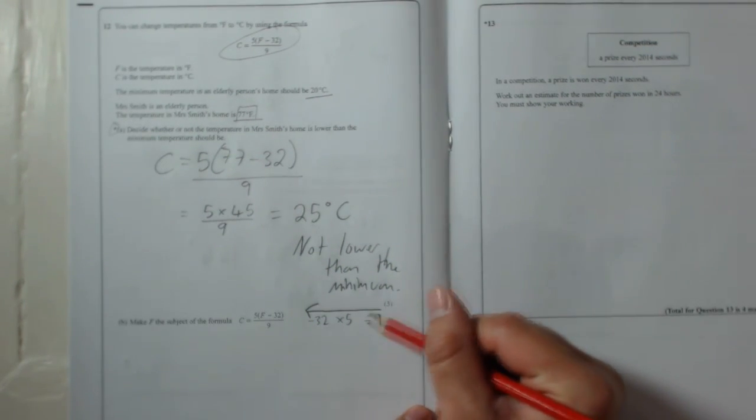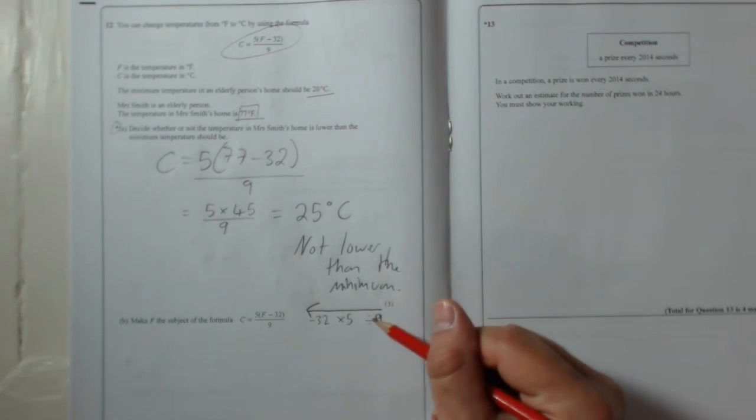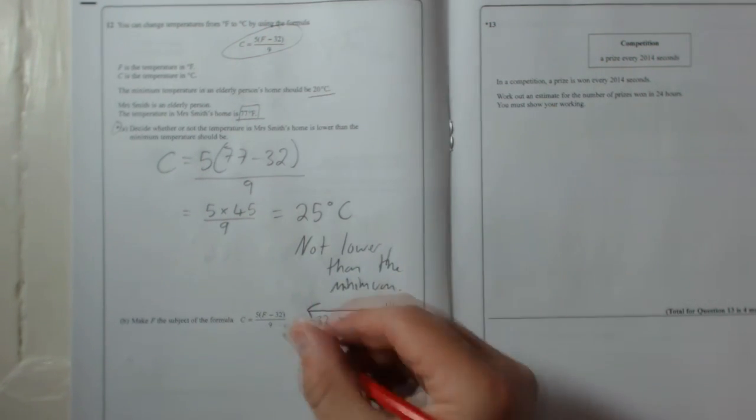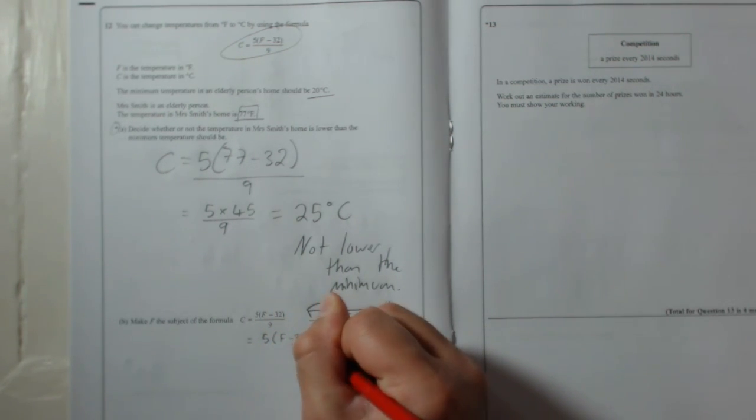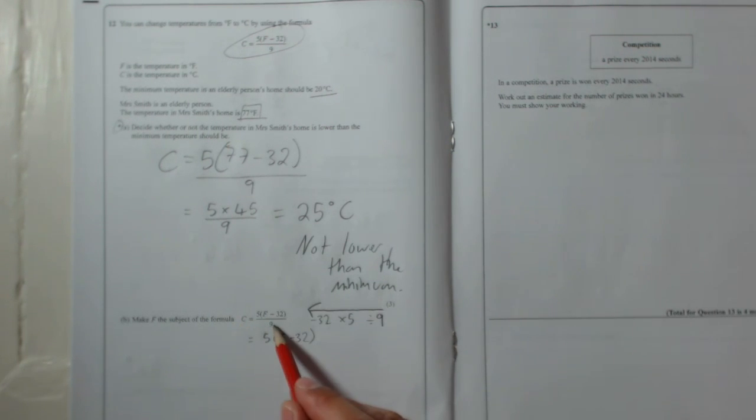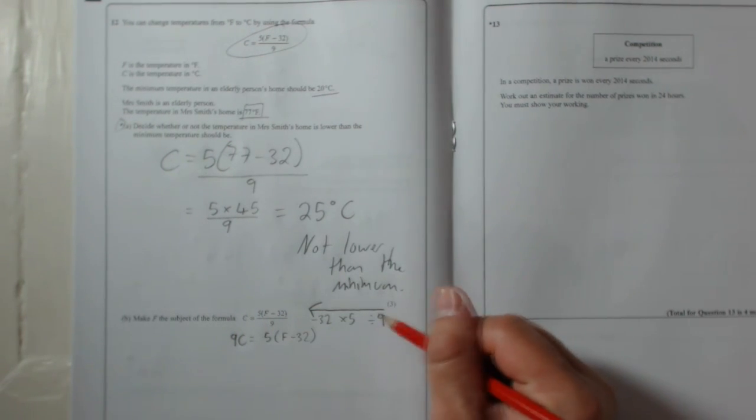So the last thing that was done to it, let's sort that out first. What's the opposite of divide by 9? Times by 9. So if we times this by 9, the only thing that happens is the divide by 9 disappears. Because if you divide by 9, then times by 9, they undo each other. So on this side, you end up with 5F minus 32. And on this side, because you've times this side by 9, you've got to multiply the other side by 9. So that's going to be 9C. Right. So we've done the divide by 9.